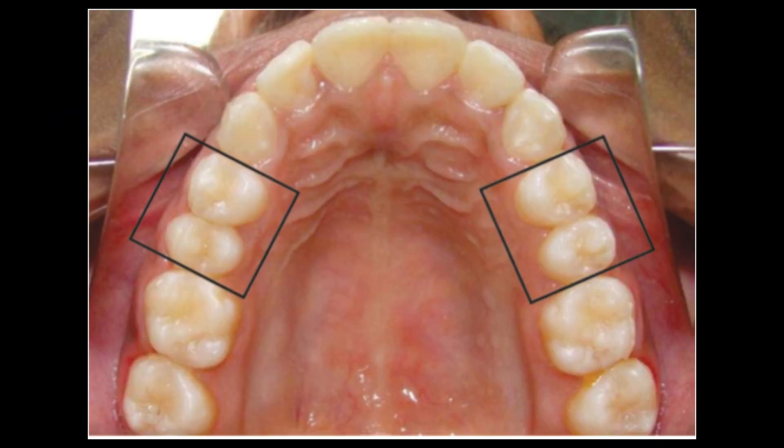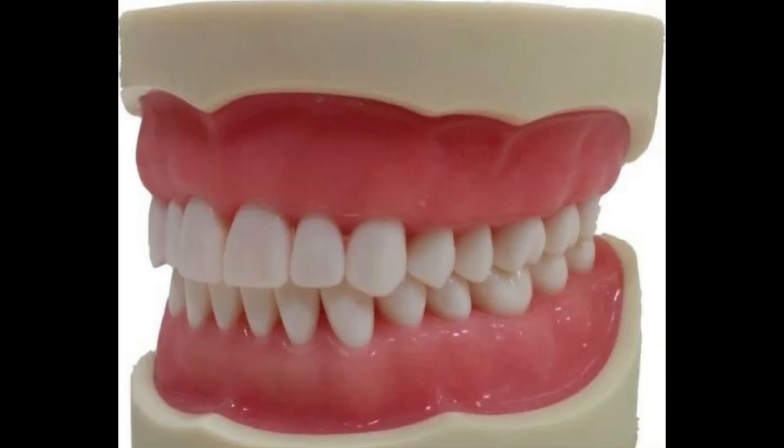There are four maxillary premolars, two in each quadrant. They are posterior to the canine and anterior to the molars. Their main function is chewing and grinding of food.